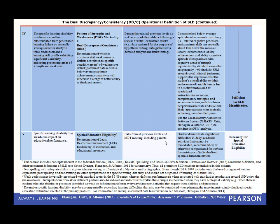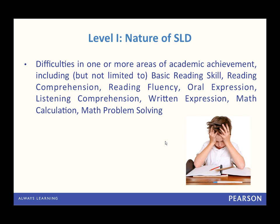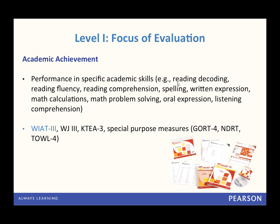Now I want to go through each level. Level one is a basic understanding that the nature of SLD involves evidence of difficulties or deficits in one or more areas of academic achievement. There are eight areas specified under federal law: basic reading skill, reading comprehension, reading fluency, oral expression, listening comprehension, written expression, math calculation, and math problem solving. Given that SLD involves an academic weakness, our evaluation would focus firstly on assessing academic achievement. It's important to know the area of suspected disability and that it should be fully assessed — you don't have a reading referral and give just one measure of word reading. You need to assess academic domains broadly in each area of suspected LD.